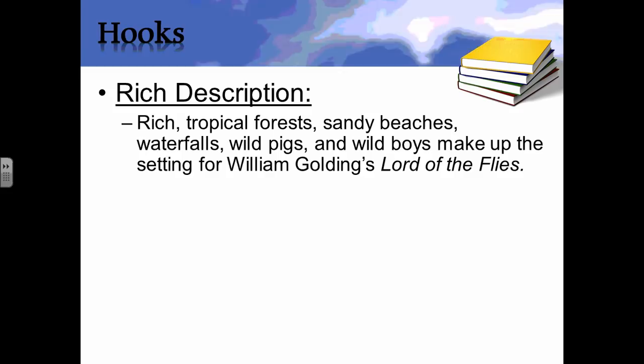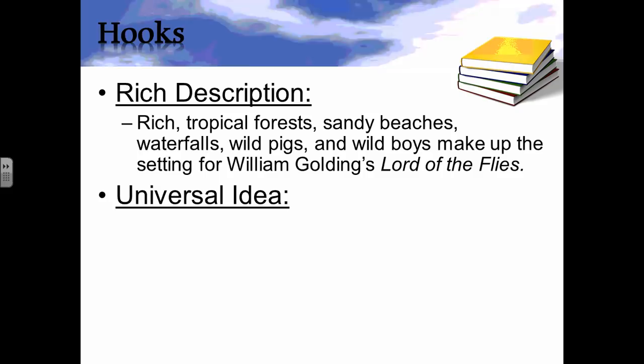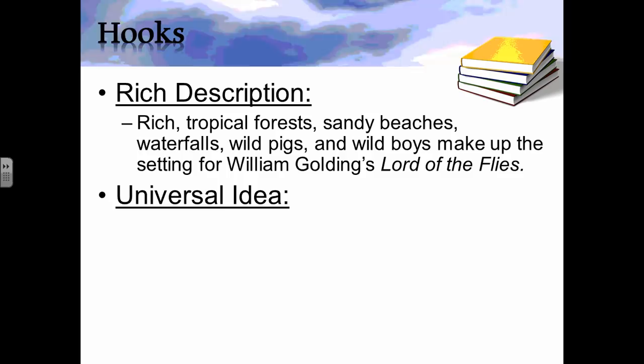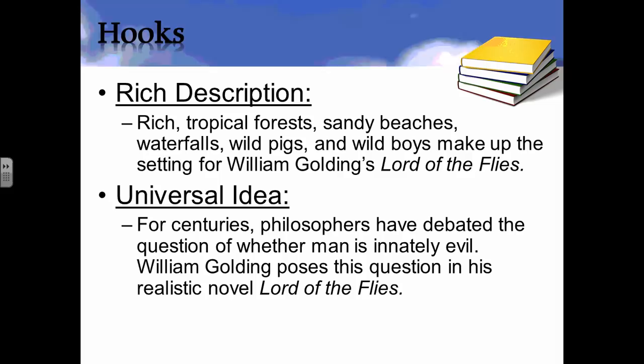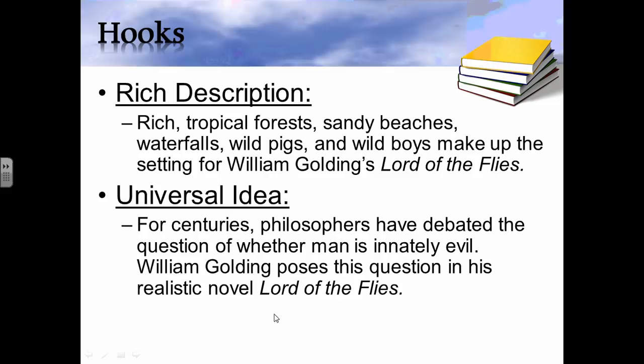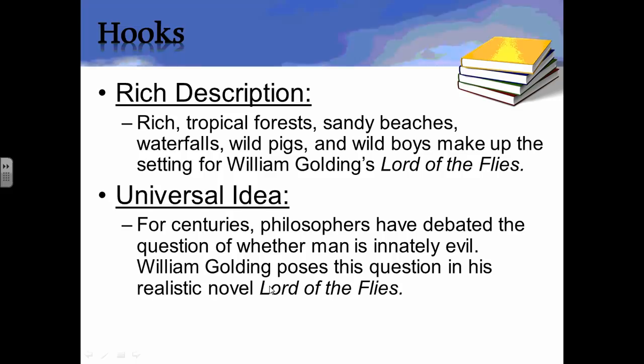The fourth hook is a universal idea, which often connects directly to a theme. Here's an example: 'For centuries, philosophers have debated the question of whether man is innately evil. William Golding poses this question in his realistic novel Lord of the Flies.' Two sentences, and then you follow with a couple of plot synopsis sentences and your thesis, and you're good to go.